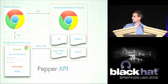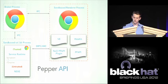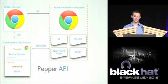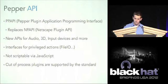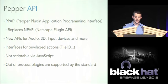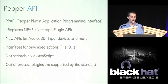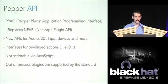The Pepper API — also called PPAPI, the terms are interchangeable — lives in the top-right Chrome renderer process, within the outer sandbox, alongside WebKit and the V8 JavaScript engine. Pepper replaces NPAPI. NPAPI still exists in Chrome but was designed for browsers written ten years ago, and Google took the initiative to create this new standard. There are new APIs for audio, 3D, and input devices, and privileged interfaces for things like file I/O.